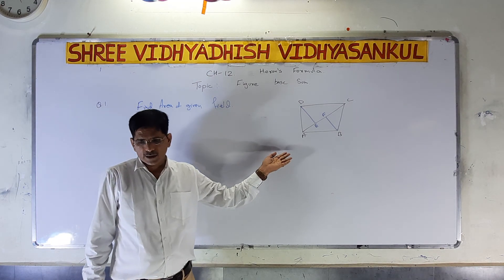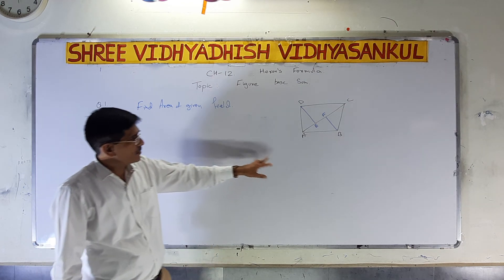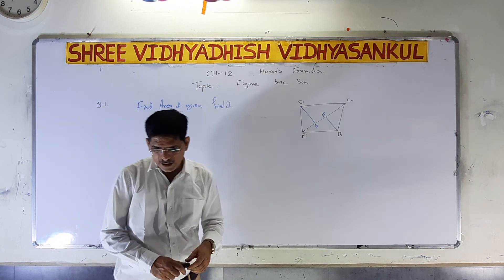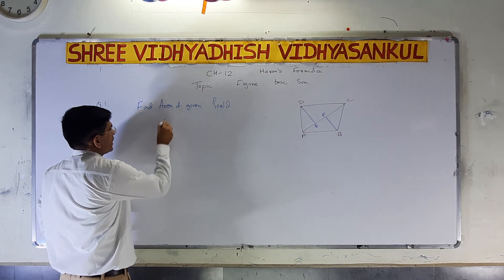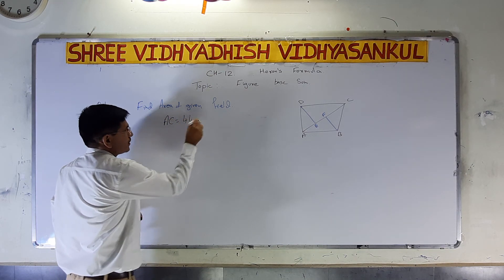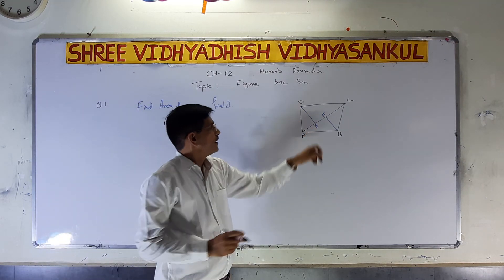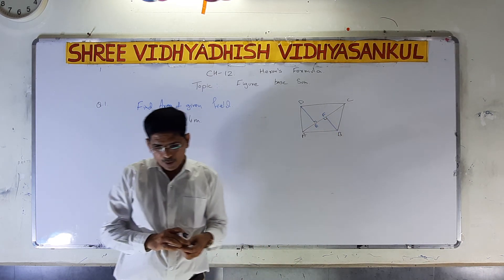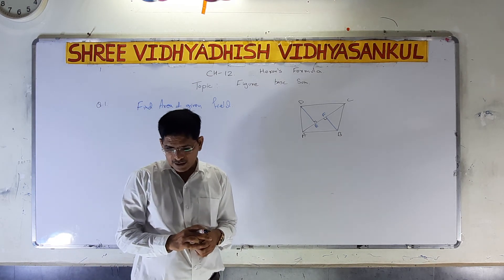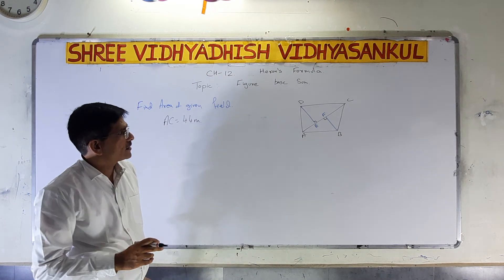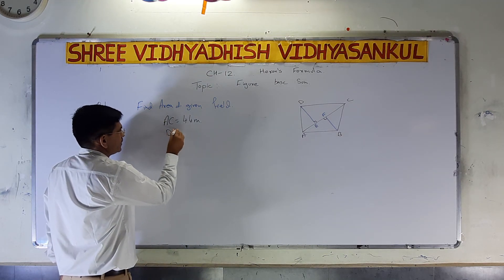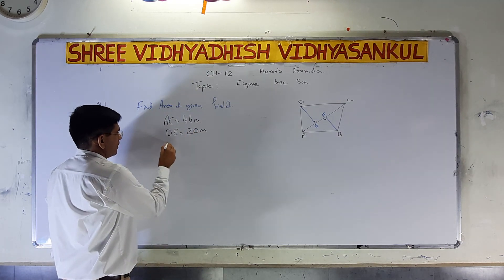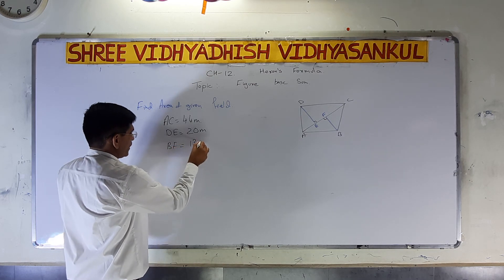It is one type of quadrilateral described in a figure. ABCD is given as a quadrilateral. The diagonal AC is given in the question as 44 meters. So AC is equal to 44 meters. The perpendiculars from the opposite vertices on this diagonal are 20 meters and 30 meters. So DE is equal to 20 meters and BF is equal to 30 meters.